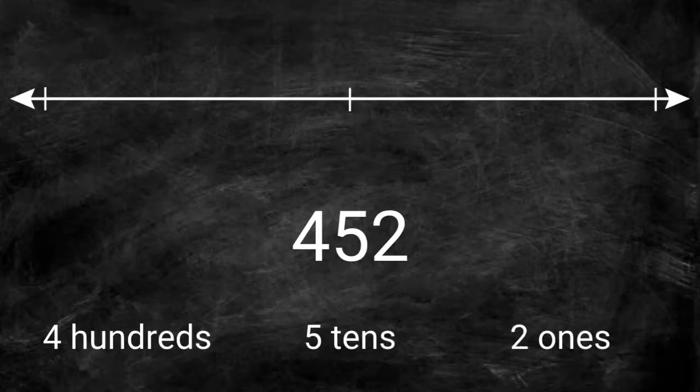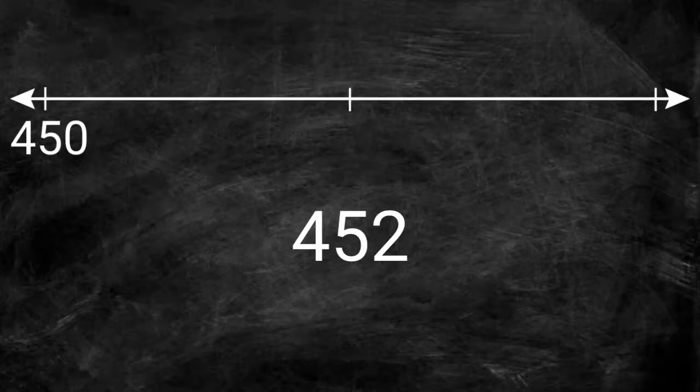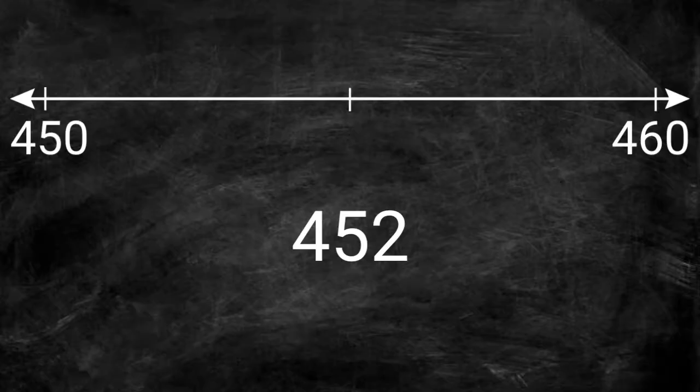Now let's get a little more challenging. Let's round 452 to the nearest 10. We see that the number 452 is really 400s, 5 10s, and 2 1s. Since we are rounding to the nearest 10, let's focus on just the 5 10s. We know that 450 is the 10 lower than 452. We also know that 460 is the 10 higher than 452.